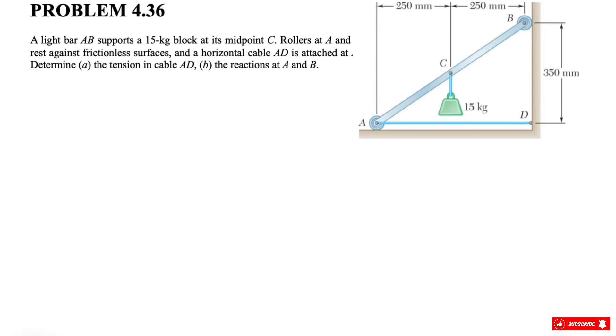Okay, welcome back guys. We have another question from Chapter 4 of Peter Johnson's textbook. In today's video, we have a light bar AB that is supporting a 15 kilogram block at its midpoint C. We have two rollers at A and B resting against frictionless surfaces, and we have a horizontal cable AD that is attached at point A. So we need to determine the tension in cable AD.